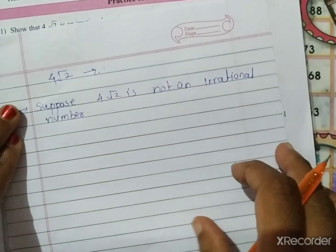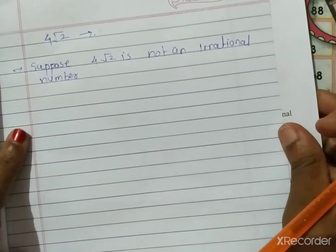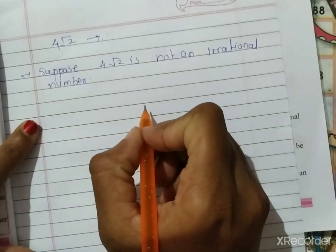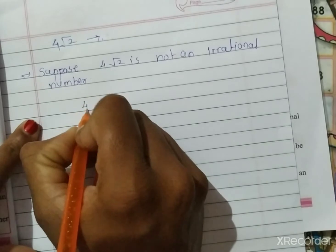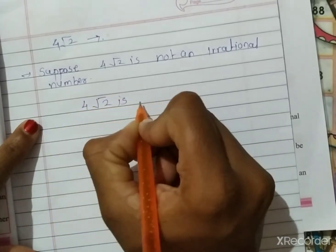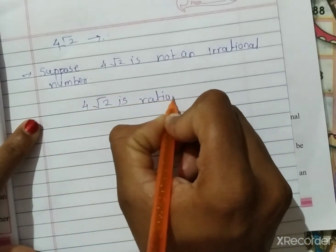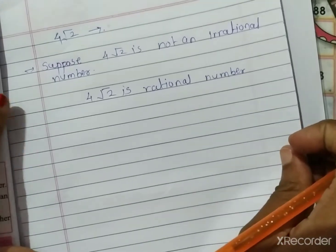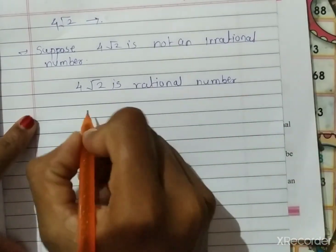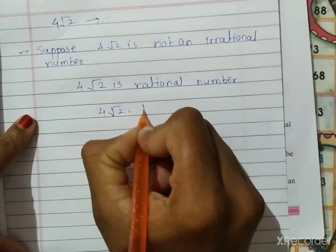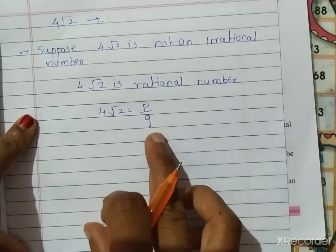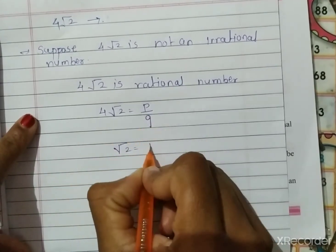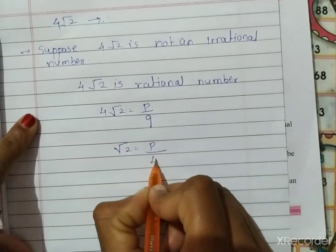So 4√2 is a rational number. Since it is a rational number, it can be written as p divided by q. So 4√2 = p/q, which gives us √2 = p divided by 4q.